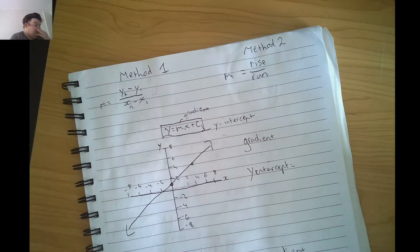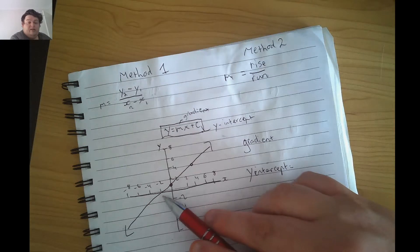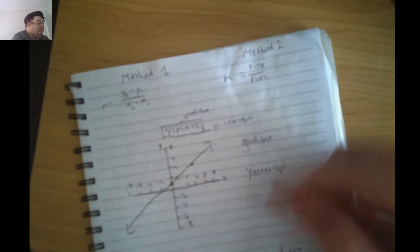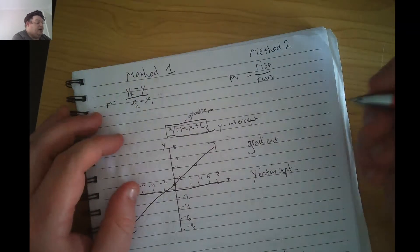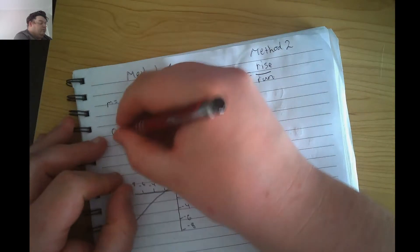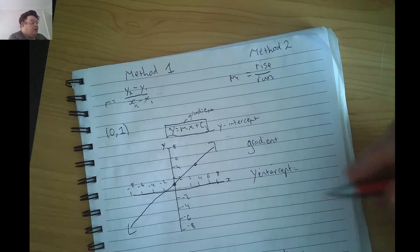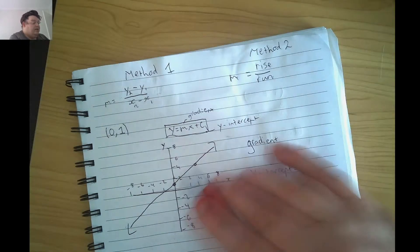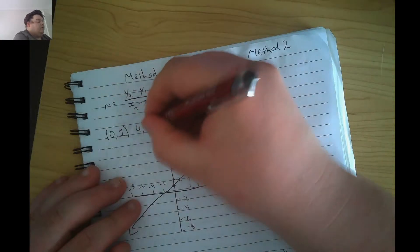You can see that we have two points on this graph. One of them is where this line is crossing the y here, so that's actually the y-intercept. And that point is 0, 1, because remember x comes first. So 0, 1 is that point, and then the other point is here, which is at 4 and 4.